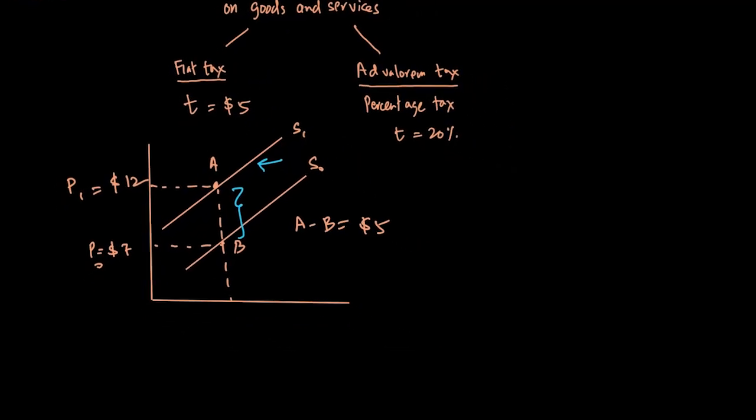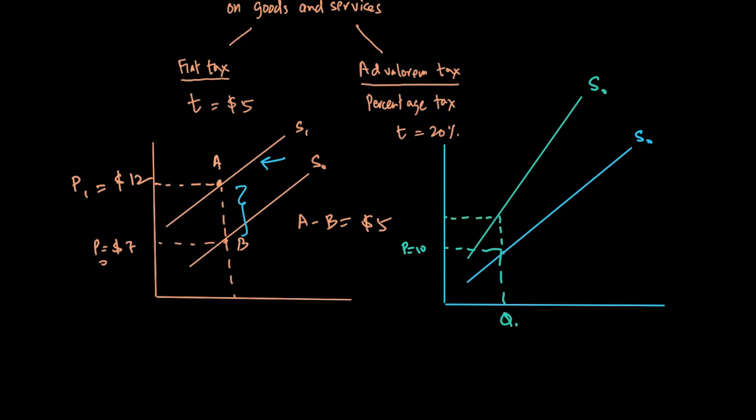On the other hand, when we look at ad valorem tax and the shift of the supply curve, we will see the shift to be non-parallel because now it's a percentage tax. When the price was $10 and you're putting 20% tax, something which is $10 will now become expensive by 20% more, which means by $2 more, or the new price will be $12.